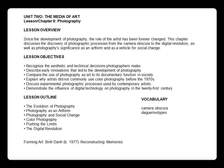The objectives for this lesson are to recognize the aesthetic and technical decisions photographers make, describe early innovations that led to the development of photography, compare the use of photography as art to its documentary function in society, explain why artists did not commonly use color photography before the 1970s, discuss experimental photographic processes used by contemporary artists, and demonstrate the influence of digital technology on photography in the 21st century.